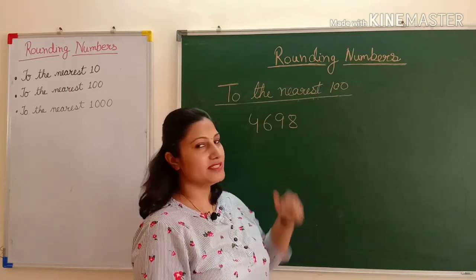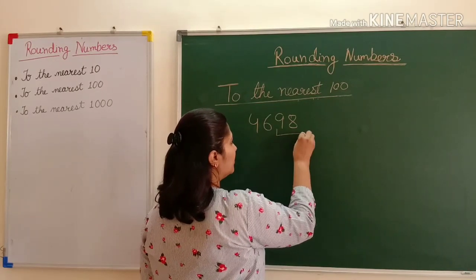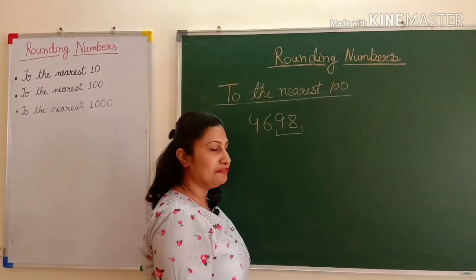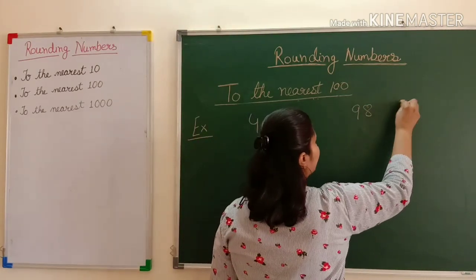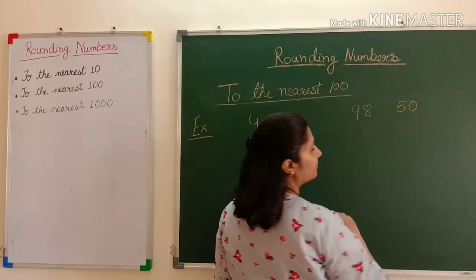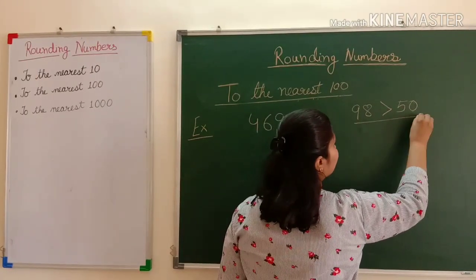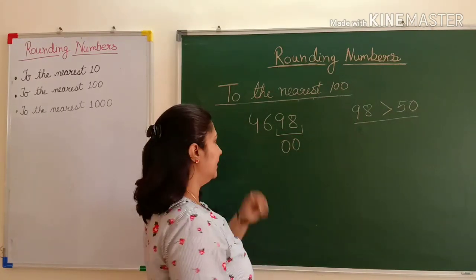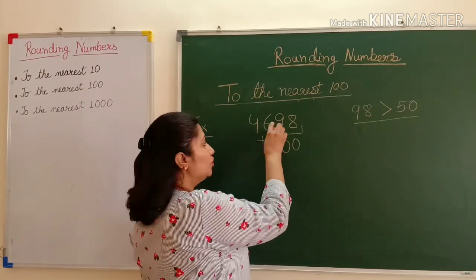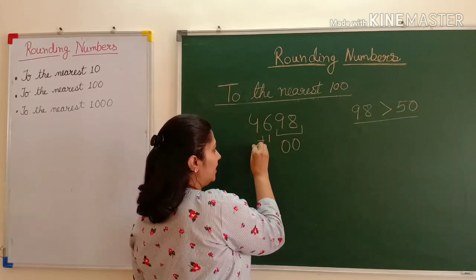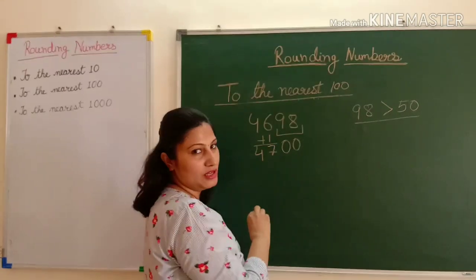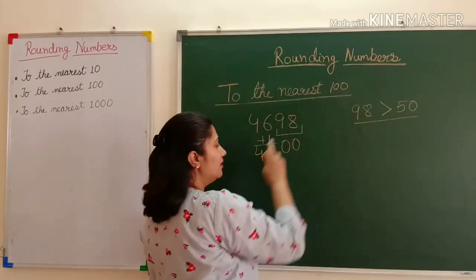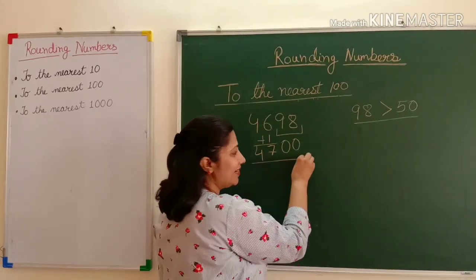Let's take a four-digit example: 4698. I compare the ones and tens digits together — the number is 98. 98 is greater than 50. So I put zero in the ones and tens places and add one to the hundreds place: 6 becomes 7, and 4 stays as it is. When I round off 4698 to the nearest hundred, the number is 4700.